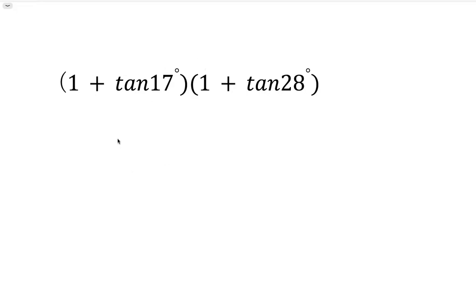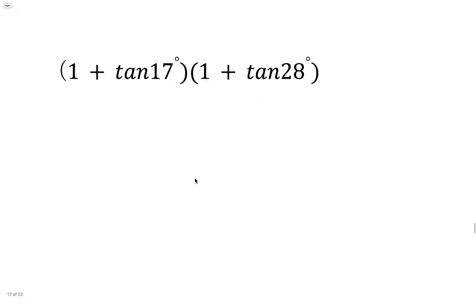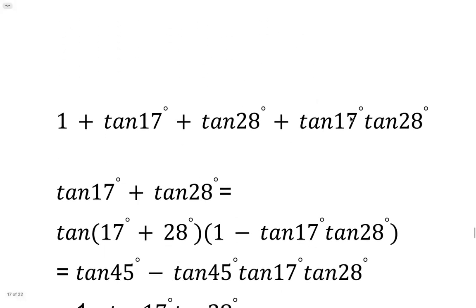So 1 times 1, we get 1. 1 times tangent 28, we get tangent 28. Tangent 17 times 1, tangent 17. Tangent 17 times tangent 28, so we get 4 terms.